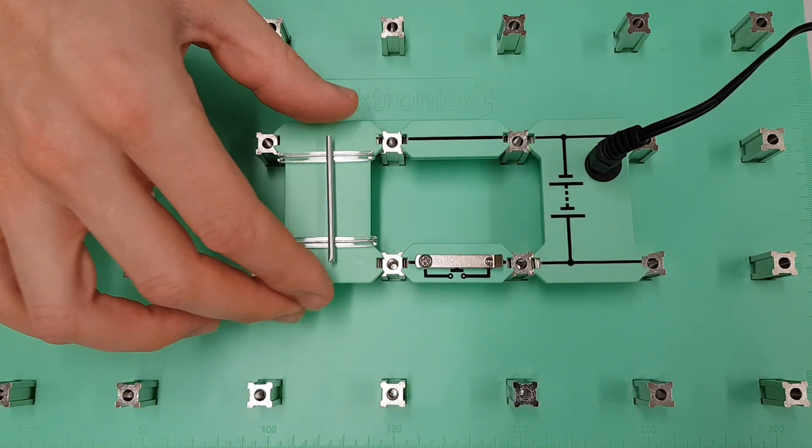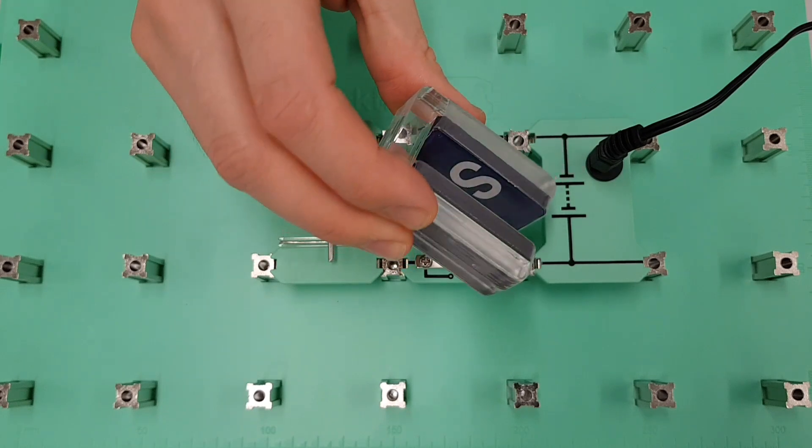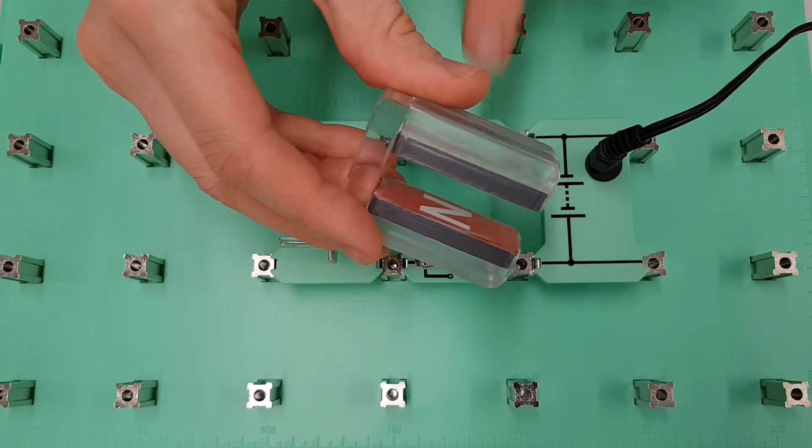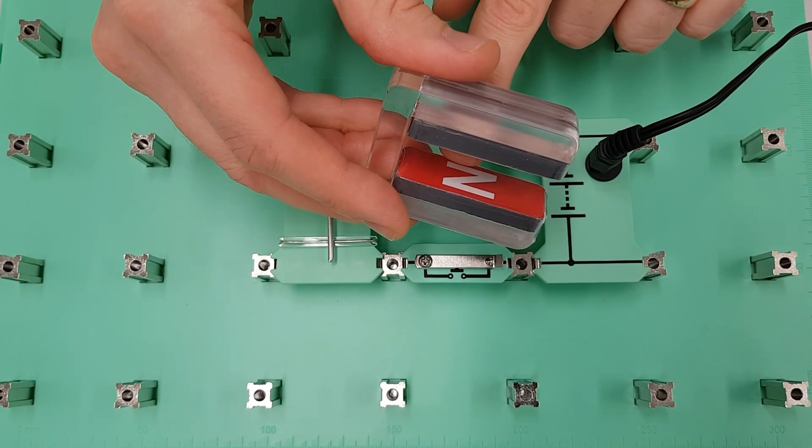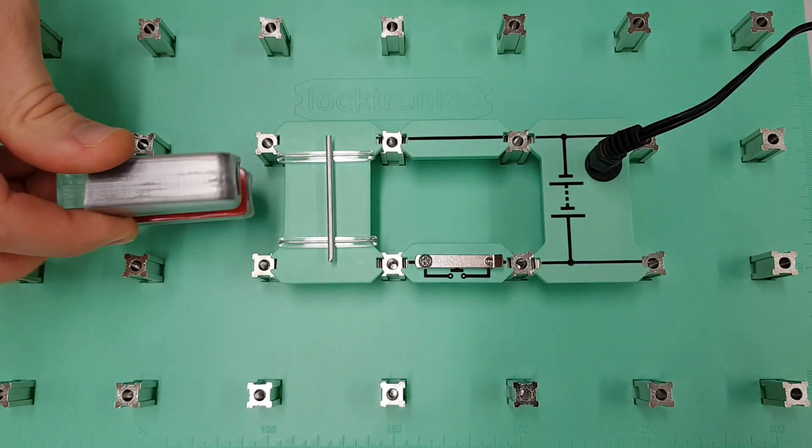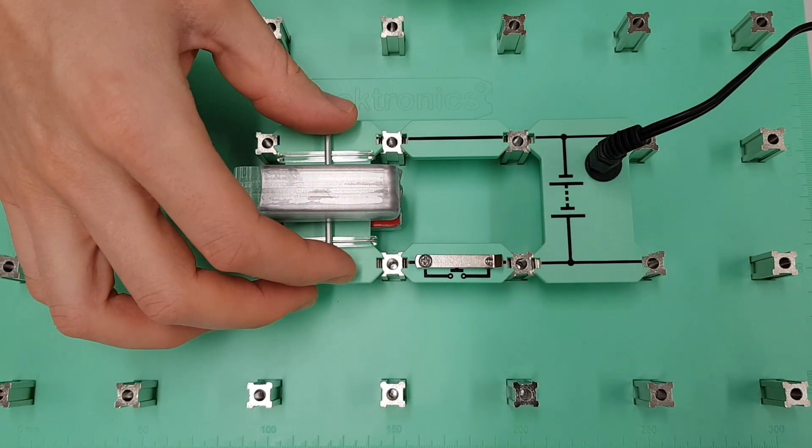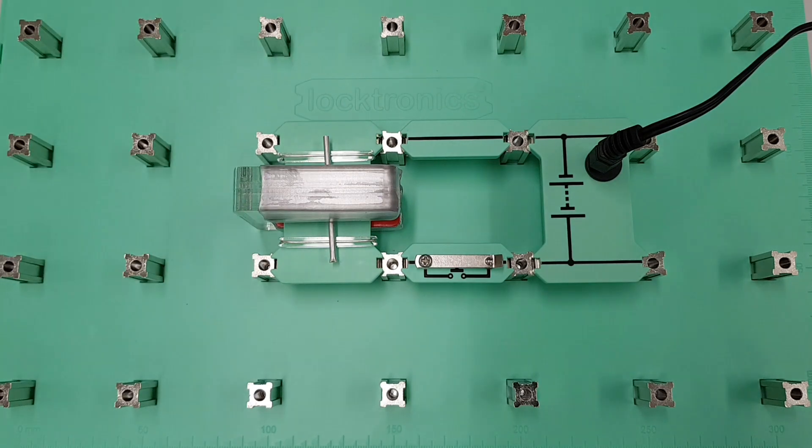Now surrounding that we are going to put this little bit of kit here. Now this is a magnet, a permanent magnet, and as you can see we've got our north pole here and our south pole here and that's just going to sit over the conductor and what that's going to do is it's going to affect that conductor.